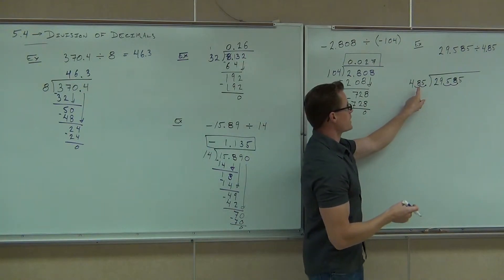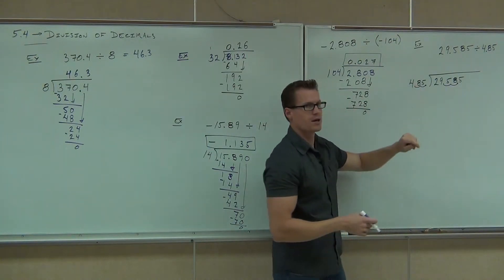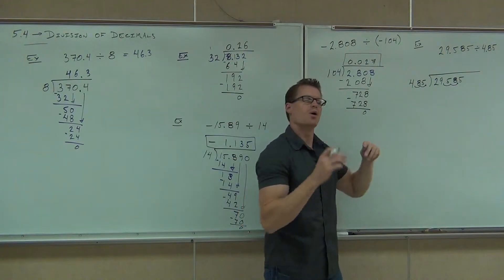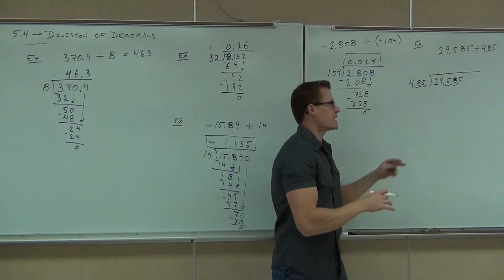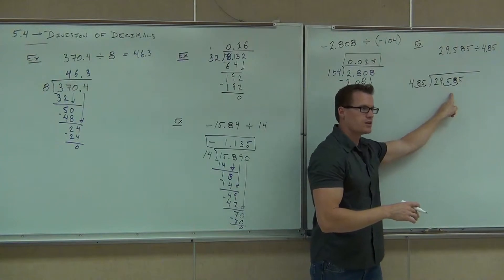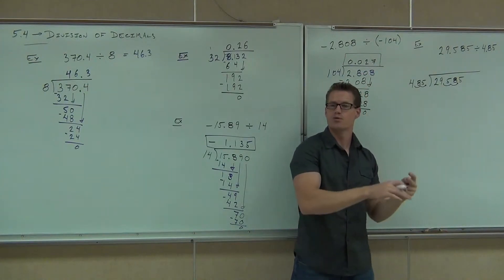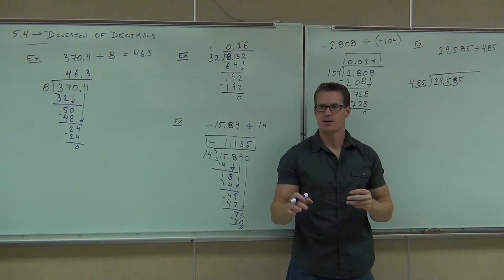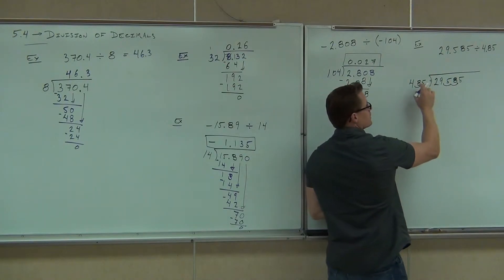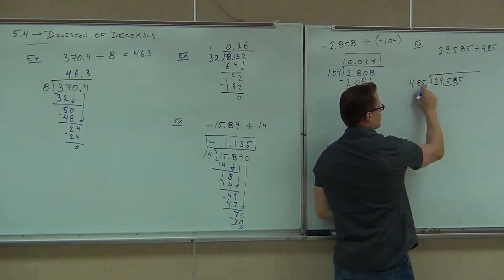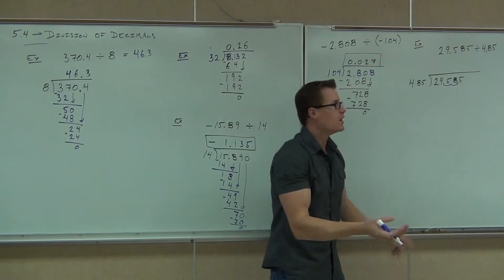So right now we're translating this 4.85 into 485. What that means is that if you move these two spaces, you also have to move these two spaces. It's necessary — you can't move one without moving the other. Nod your head if you're OK on that. So instead of being 4.85, it's 485. Decimal's gone. It's a whole number now.